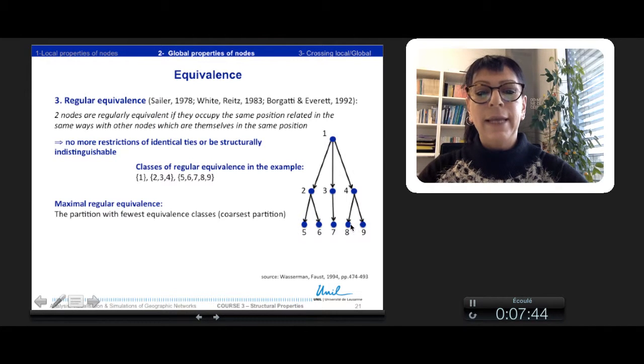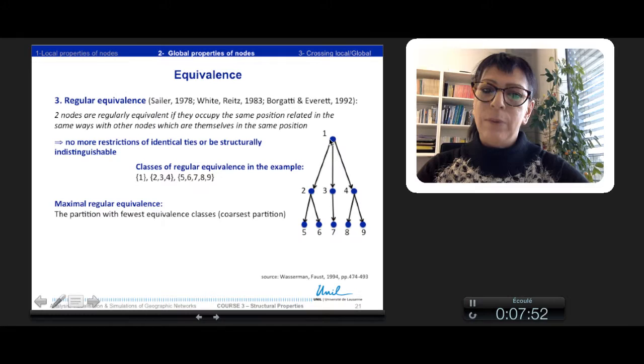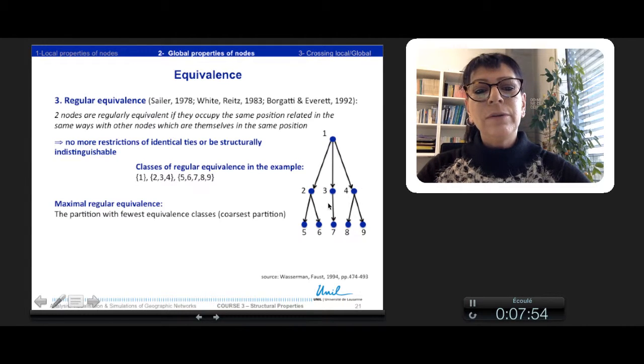And 5, 6, 7, 8, 9 is a class. For example, we can have in an enterprise a CEO which is one, the managers and the employees. So each of them constitute a class.